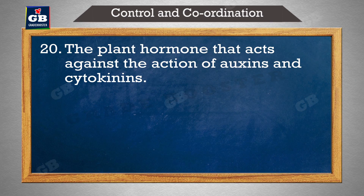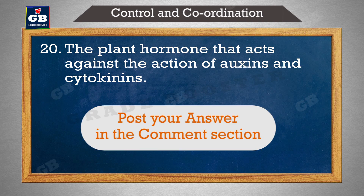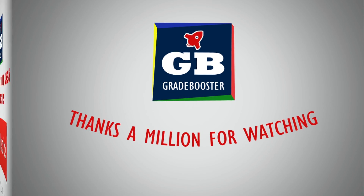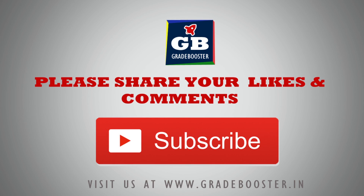The plant hormone that acts against the action of auxins and cytokinins — plant ke hormone jo auxins aur cytokinins ke ulta kaam karta hai. Post your answer in the comment section.